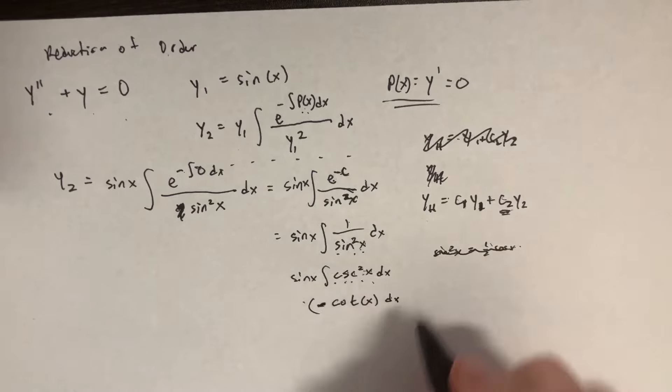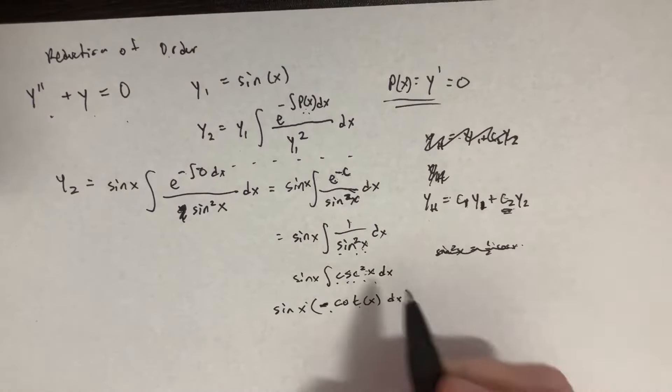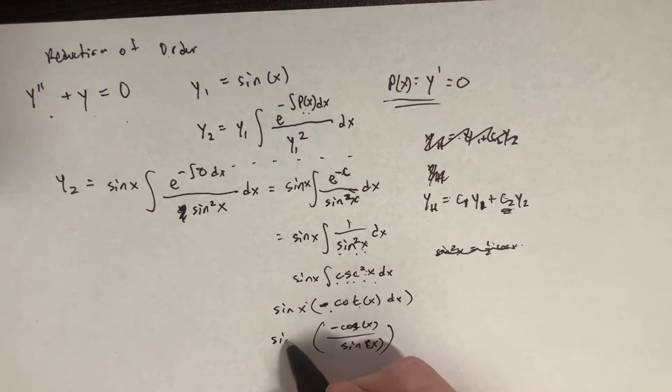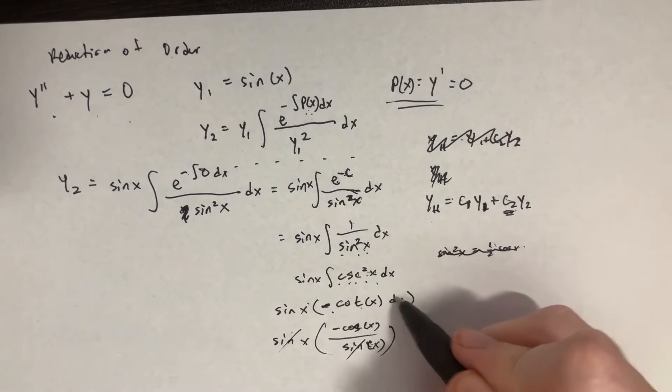Now we still have this whole sine of x thing that we have to deal with. But the cool thing is that cotangent is the same thing as saying negative cosine of x divided by sine of x. And now the sine of x cancels out.